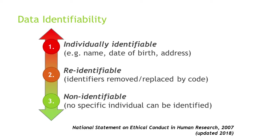In practice, non-identifiable data is very hard to obtain, especially when nowadays we have social media and a large amount of public data available about individuals. A lot of theoretically non-identifiable datasets turn out in practice to be re-identifiable because of new ways to link details of those datasets to that large body of existing known information about people. The National Statement 2007, where these definitions were taken from, was recently updated in 2018 to represent this more as a continuum.